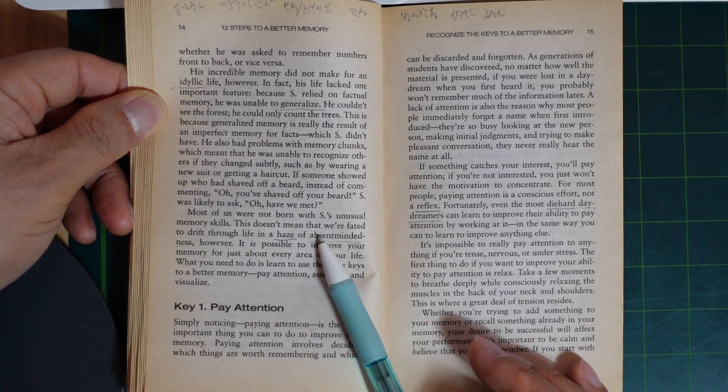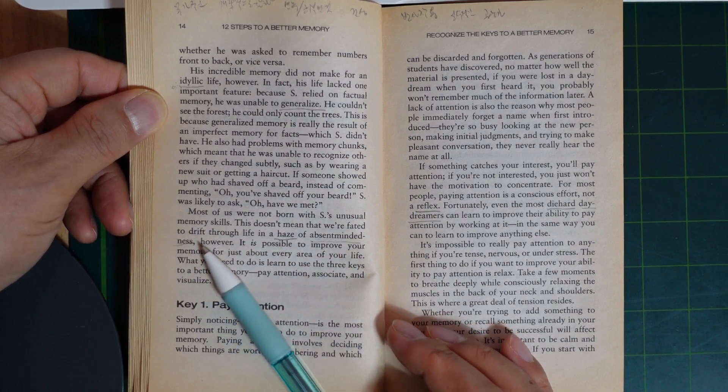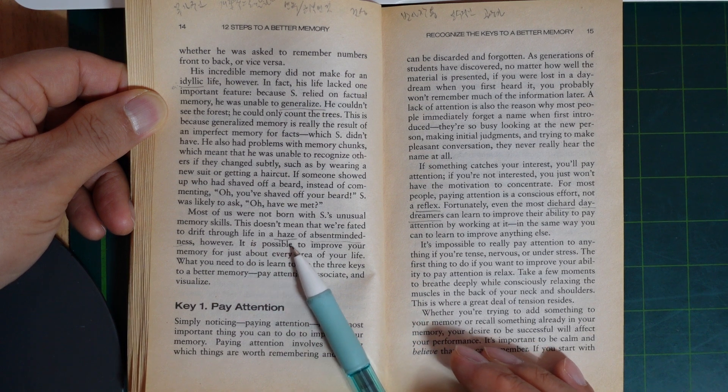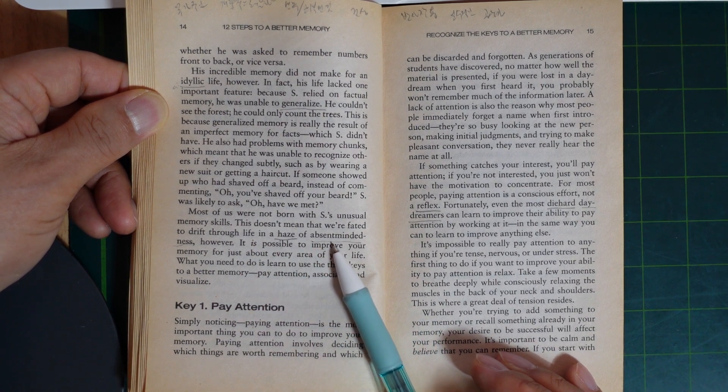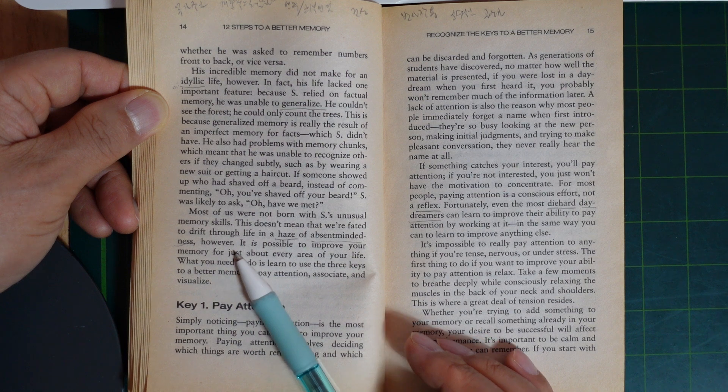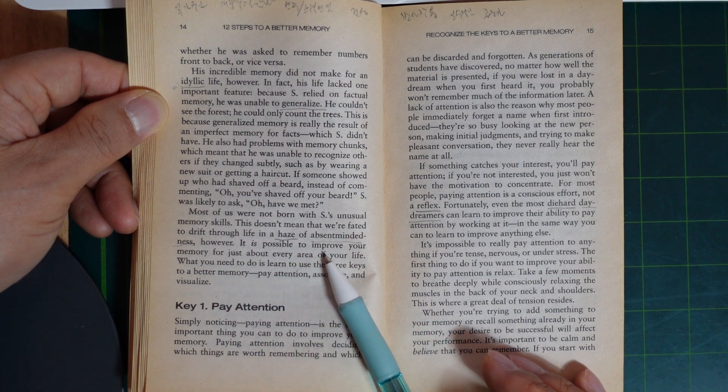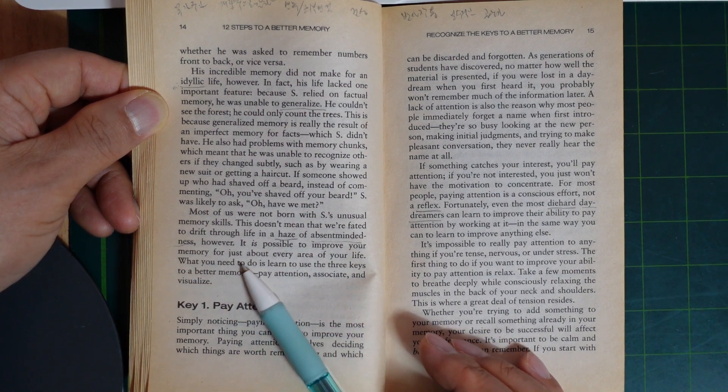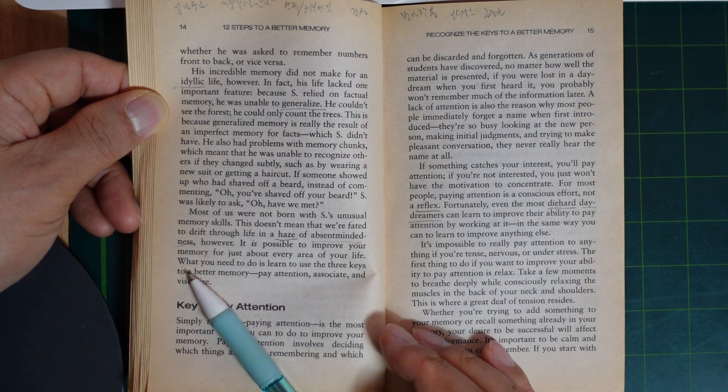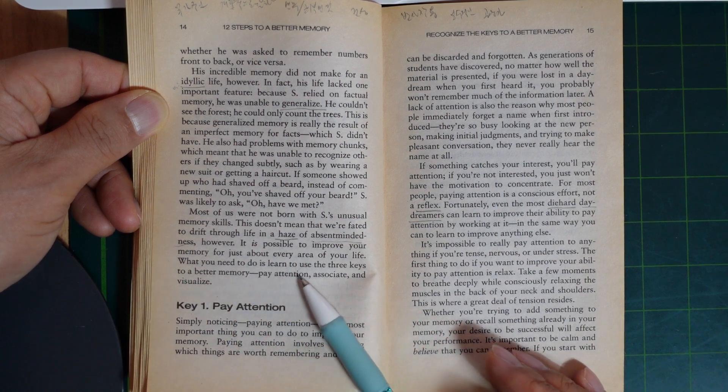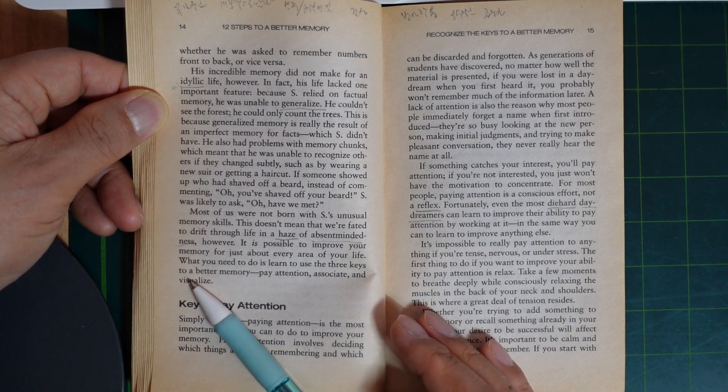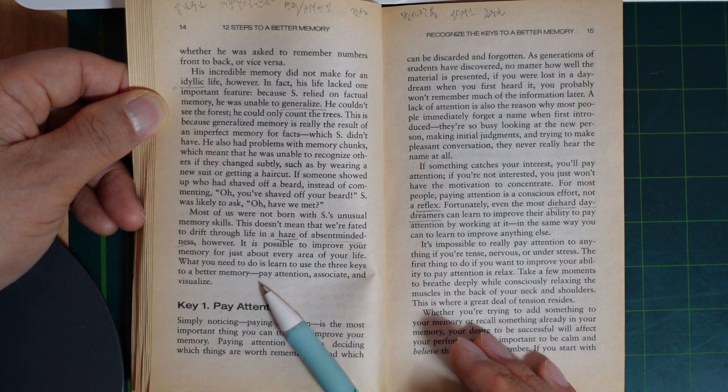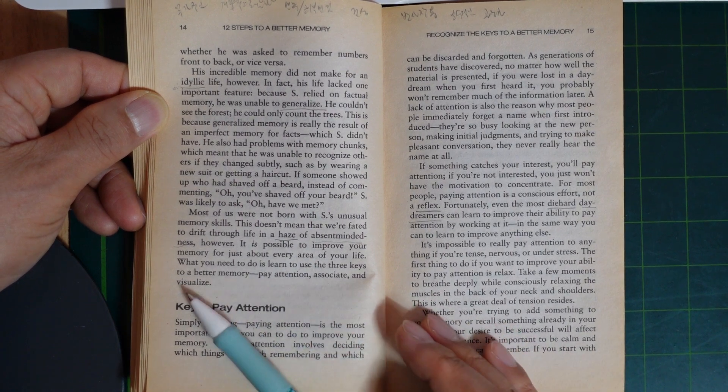Most of us were not born with S's unusual memory skills. This doesn't mean that we're fated to drift through life in our age with absent-mindedness. However, it's possible to improve your memory for just about every area of your life. What you need to do is learn to use the three keys to a better memory: pay attention, associate, and visualize.